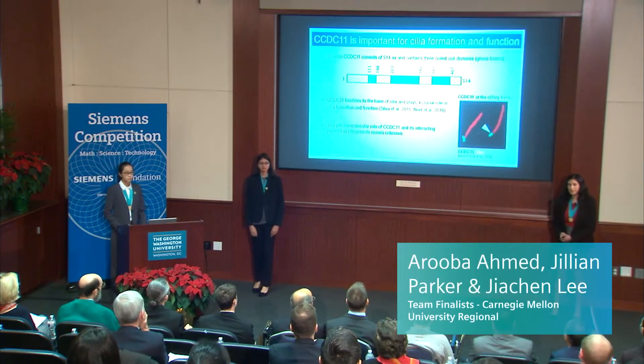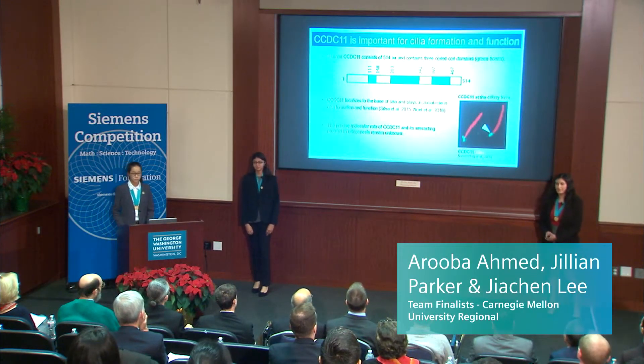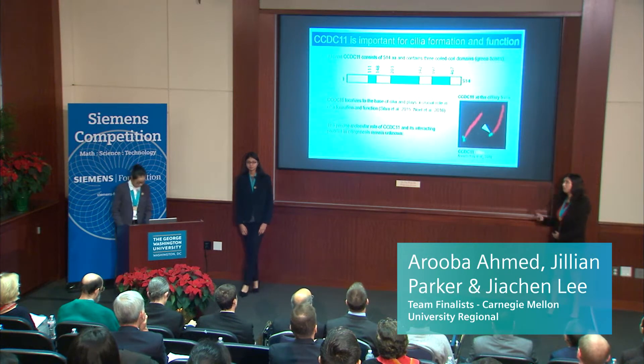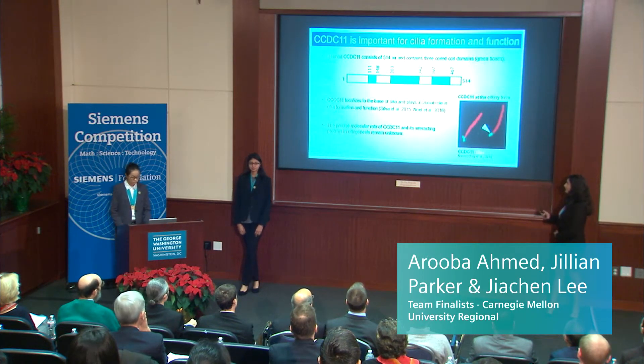CCDC11 is a 62 kilodalton basic protein shown to have three coiled-coil domains as shown by the three boxes. Previously, the protein has been established to localize to the ciliary base and play a role during ciliogenesis; however, the precise molecular role during these processes remains largely unknown.